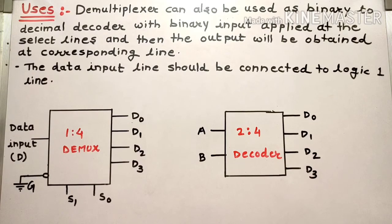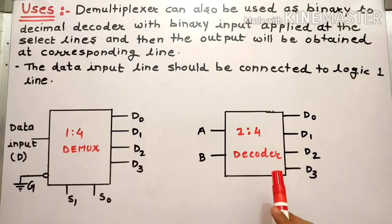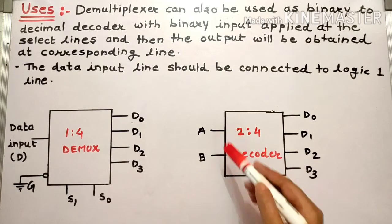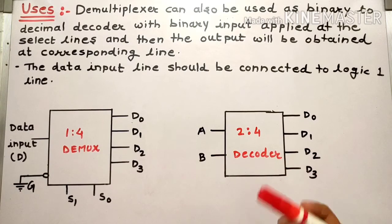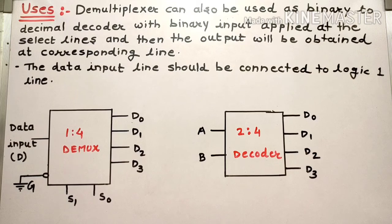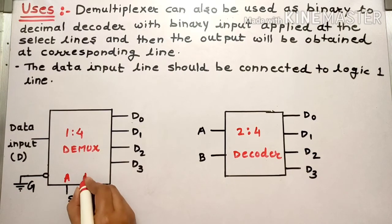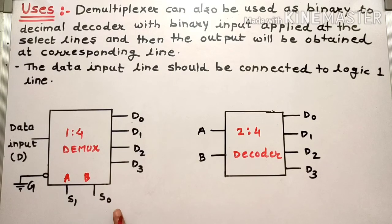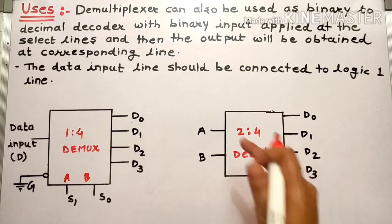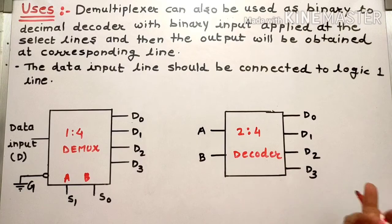The second important similarity is that there are two select inputs in the case of the demultiplexer. In the case of the decoder, there are also two inputs, considered to be A and B. So both devices have two inputs in this comparison.